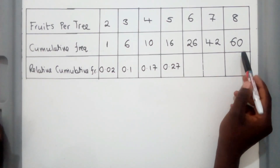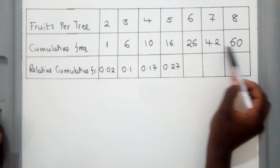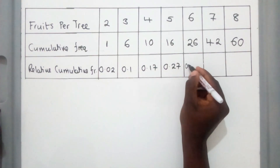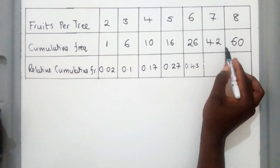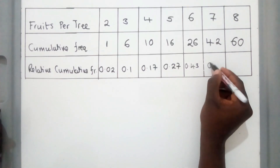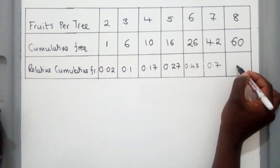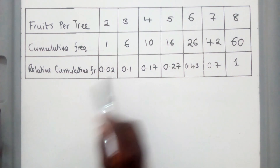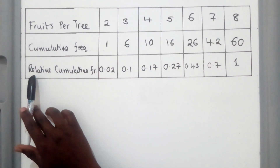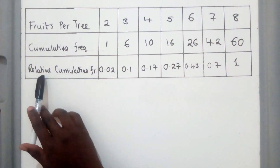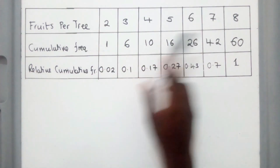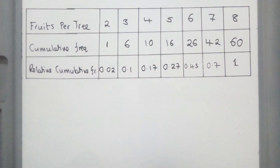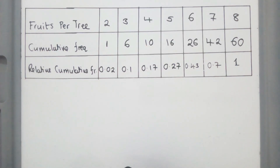For relative cumulative frequency, to find the missing numbers you just divide by 60. So 26 divided by 60 gives 0.433, and 42 divided by 60 gives 0.7. That's how you find the missing numbers for cumulative relative frequency — each cumulative frequency is divided by the total.